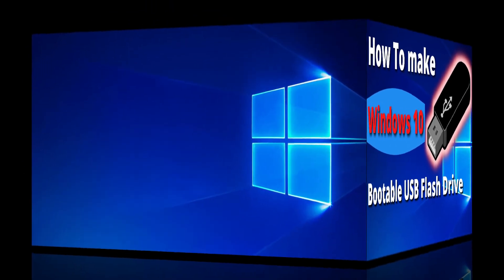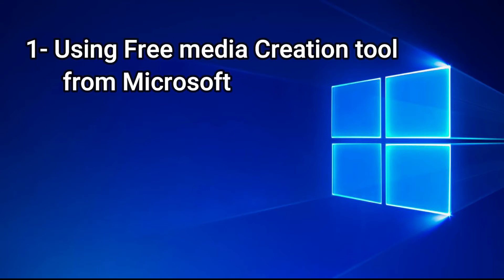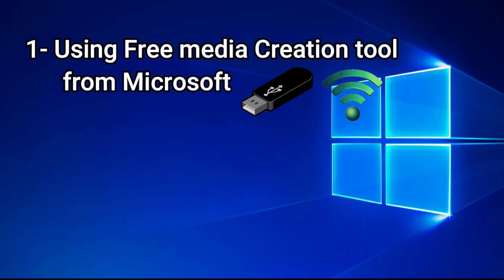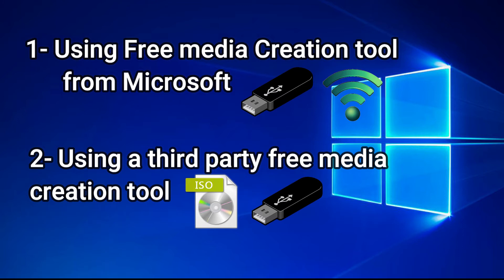There are two methods we're going to use in this video and both are totally free. Number one: using a Media Creation Tool from Microsoft — for this you need a flash drive of at least 8 gigabytes and an internet connection. The second method is using a third-party media creation tool, for which we need a Windows 10 ISO file downloadable from Microsoft, a USB flash drive of 8 gigabytes or more, and a third-party application called Rufus.